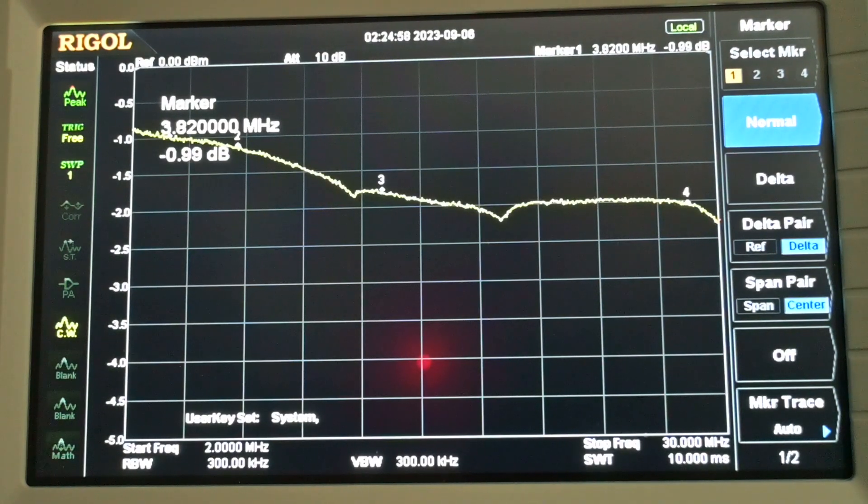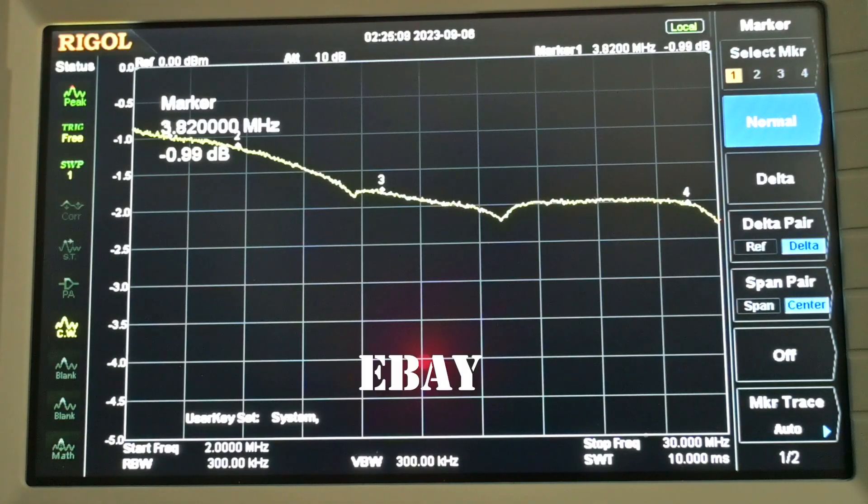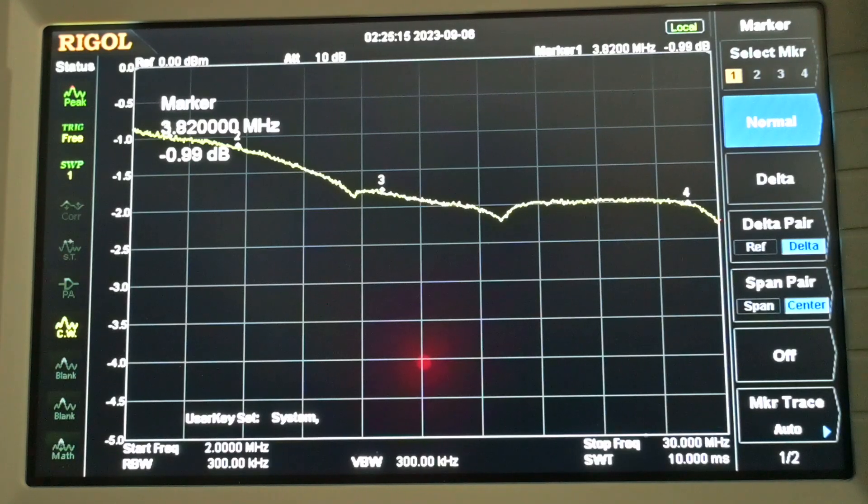For our third sweep we've installed capacitor B on each transformer. Capacitor B is the no-name 100 picofarad 10 kilovolt capacitor I got from Amazon. You can see the results: at 80 meters we're at 0.99 dB across both devices, at 40 meters 1.15 dB across both devices, at 20 meters 1.80 dB across both devices, and at 10 meters 2.06 dB across both devices.